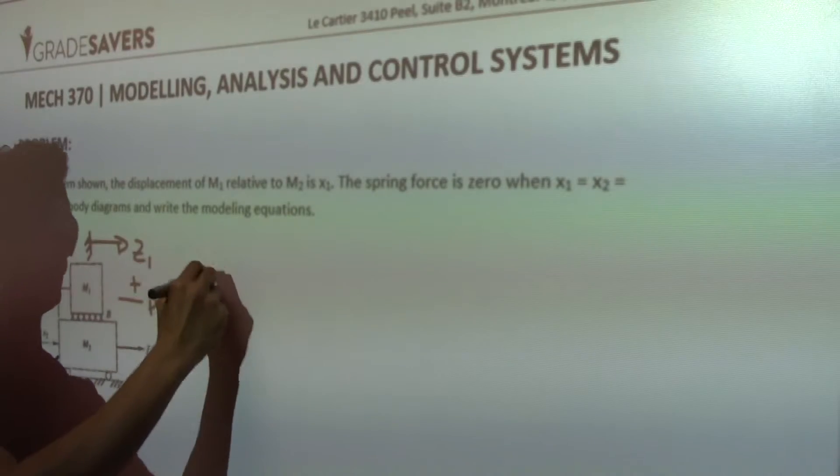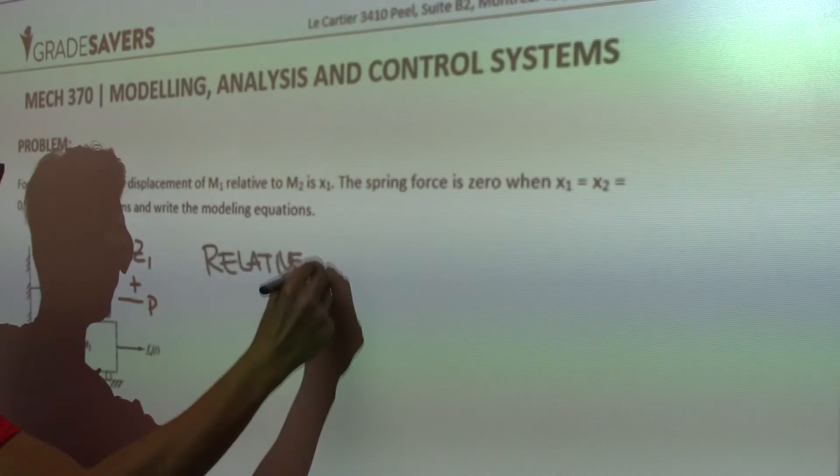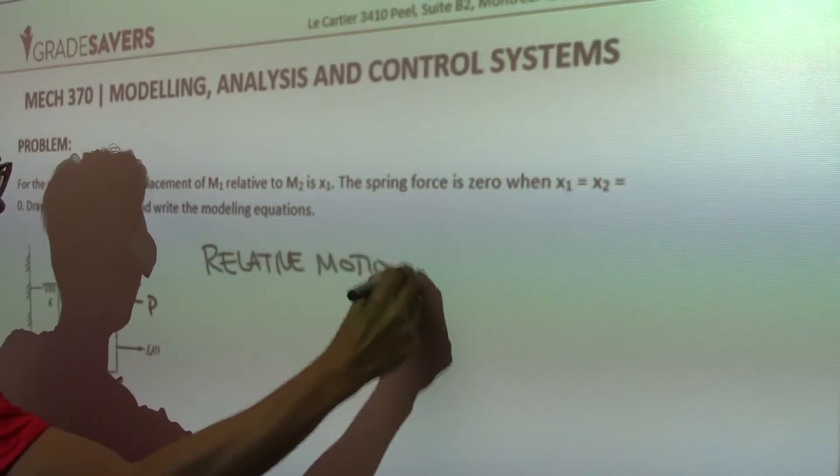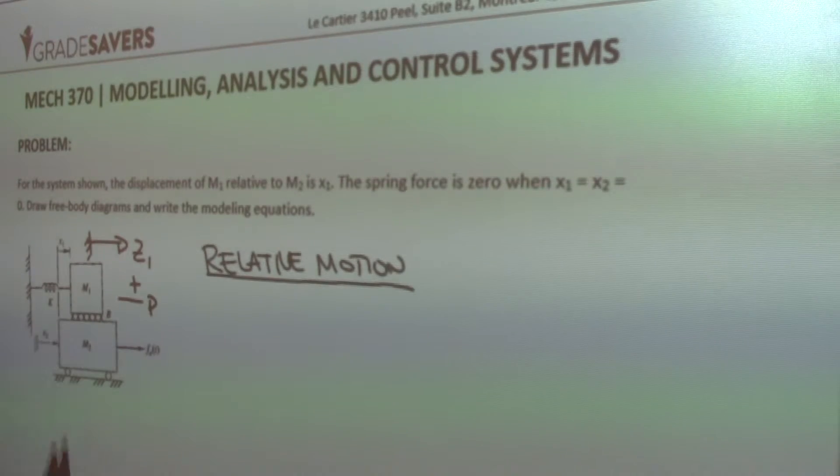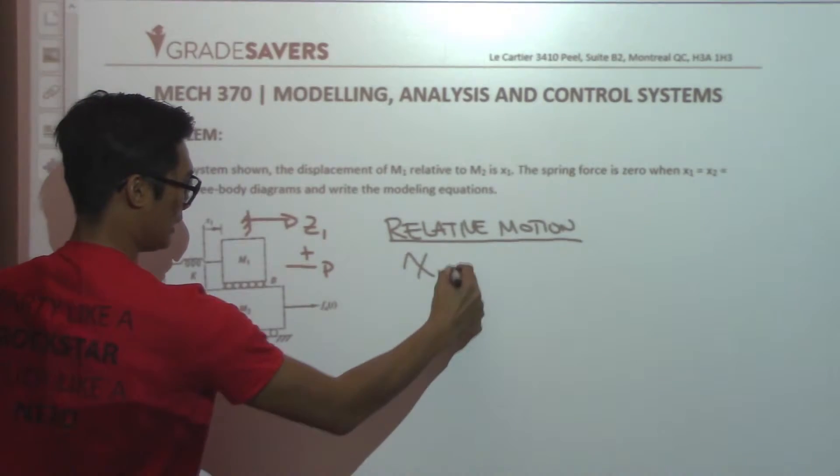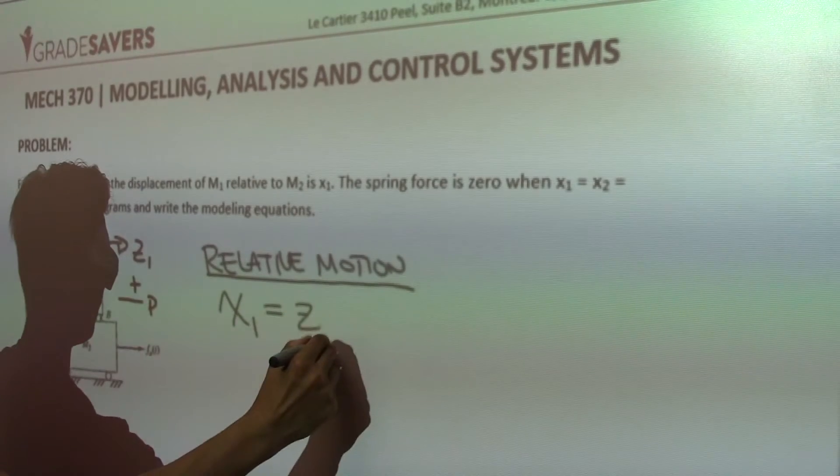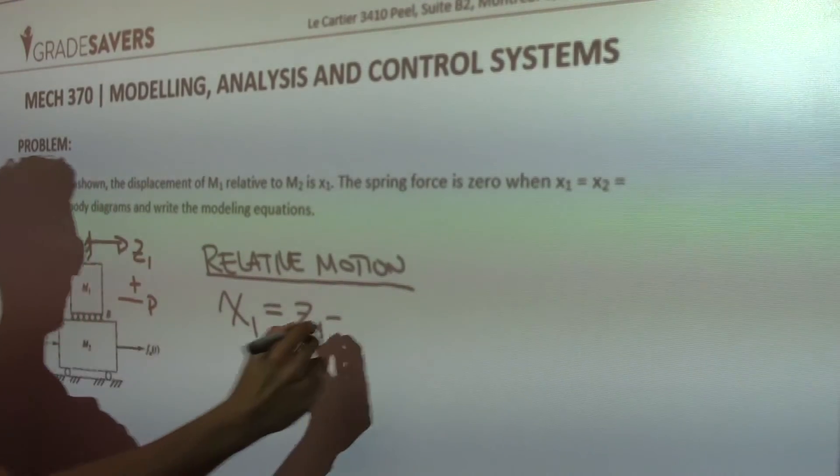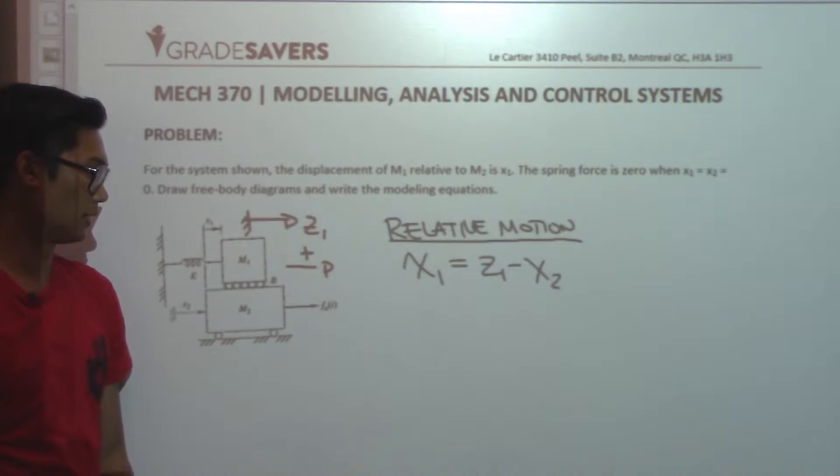Now, to make this problem a bit easier, let's first define the equation of relative motion for this problem. So we see x1, what it's telling us is that x1 is the relative motion between M1 and M2. So M1 has z1 minus M2 which has motion of x2. So I have the relative motion for this problem.